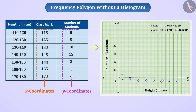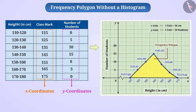We represent point O with coordinates (115, 0). Similarly, we represent all other points. Now, we complete the frequency polygon OPQRSTU by connecting all the points with line segments. In this way, we can obtain a frequency polygon even without a histogram.